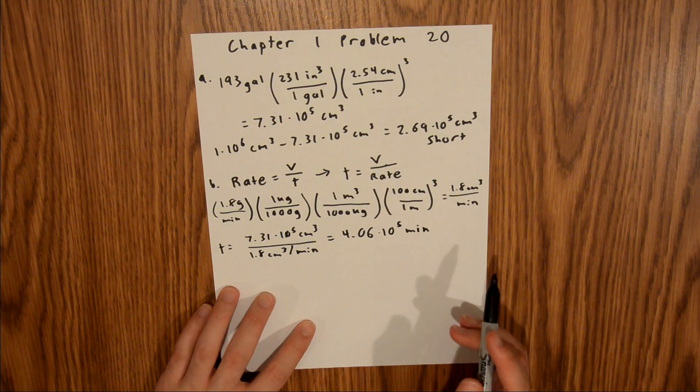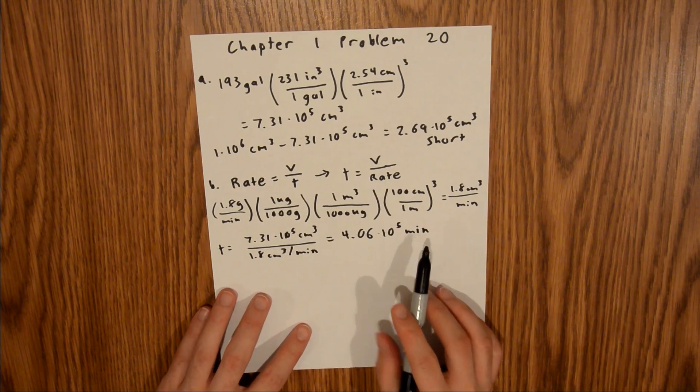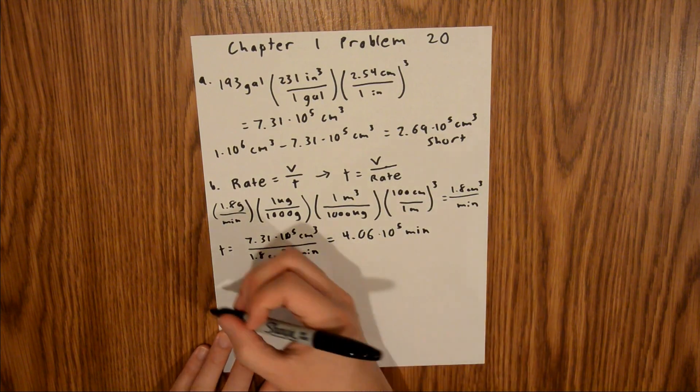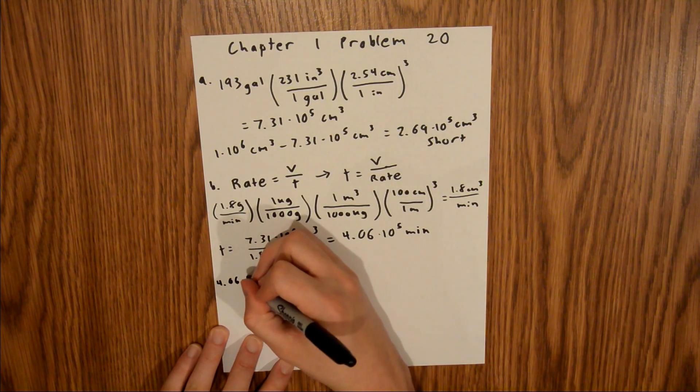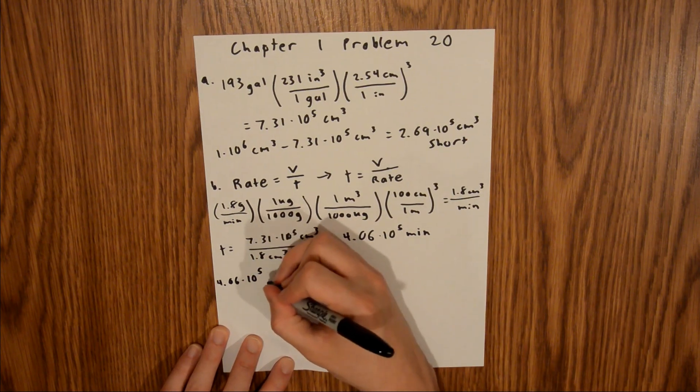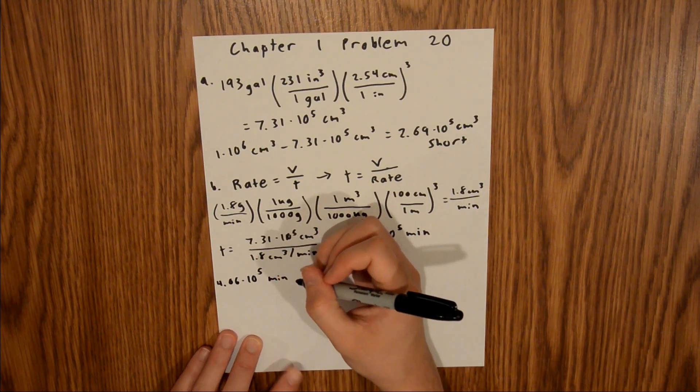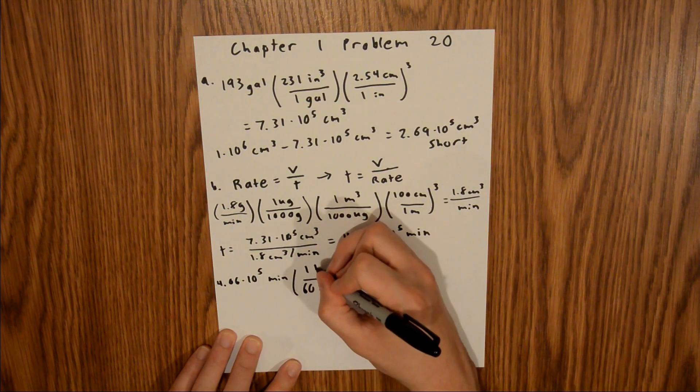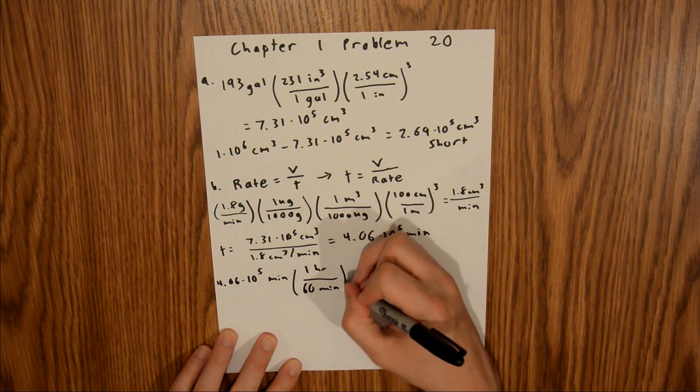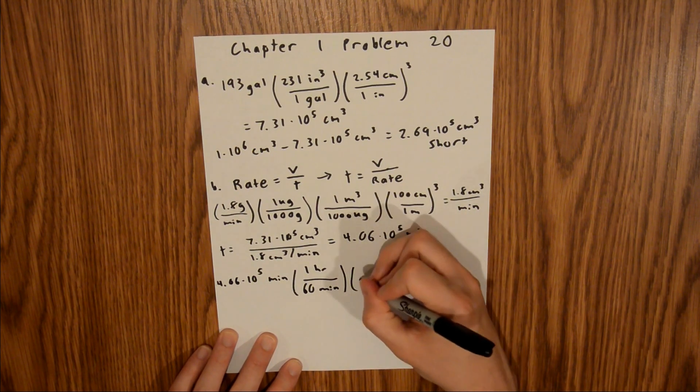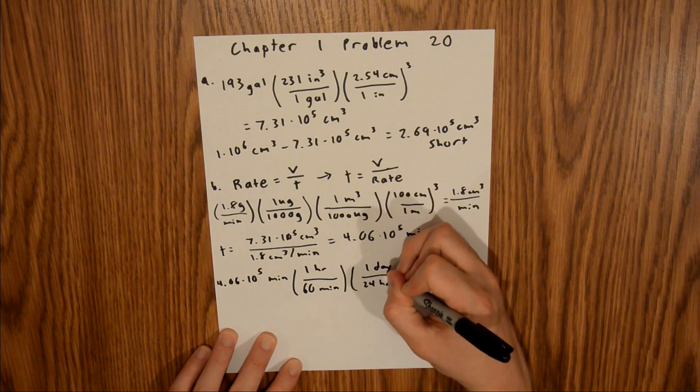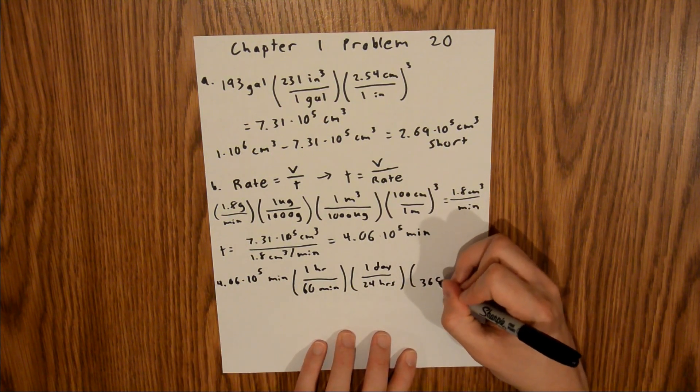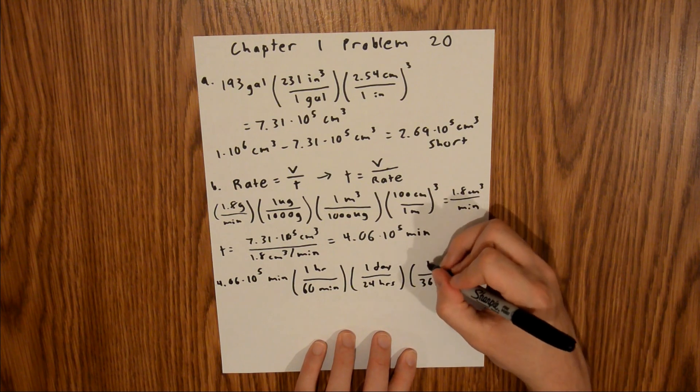And since this is kind of an odd way to report this, since this is a very high number of minutes, we're going to actually convert this to years. And so we'll start with this value, 4.06 times 10 to the fifth minutes, and we know that there are 60 minutes in one hour, there are 24 hours in one day, and there are 365 days in one year.